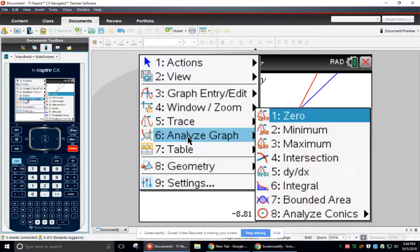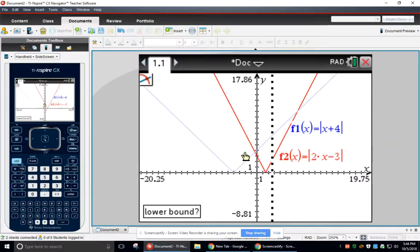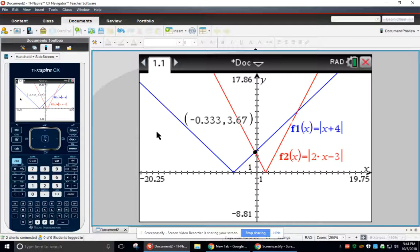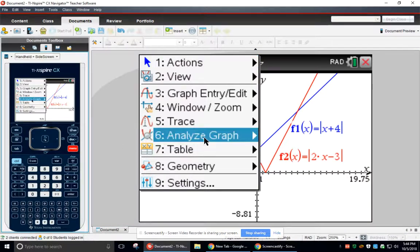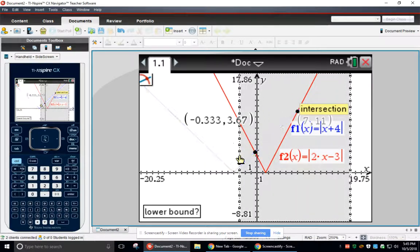So if they intersect twice, you need to go to Analyze Graph, or if they intersect at all really. Analyze Graph, the intersection, click, highlight, click. And then you have to do it again. It doesn't tell you both intersections at the same time. You have to do them individually.